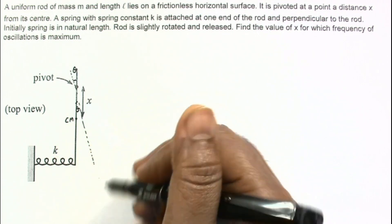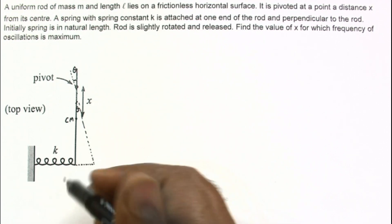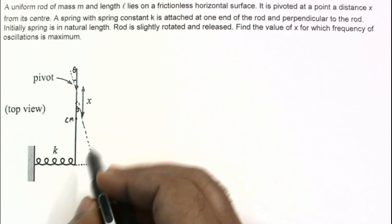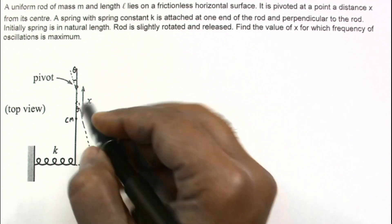Theta is a very small angle and this end will almost move in the horizontal direction on a circular arc. So this will almost move in the horizontal in this direction perpendicular to the rod. So this displacement or extension of the spring is almost perpendicular to the rod.